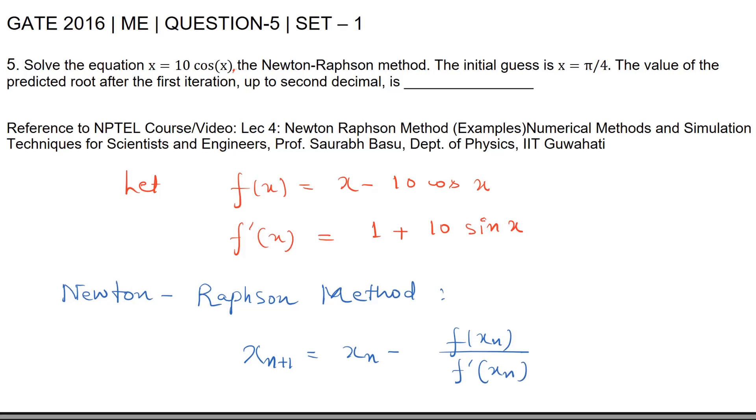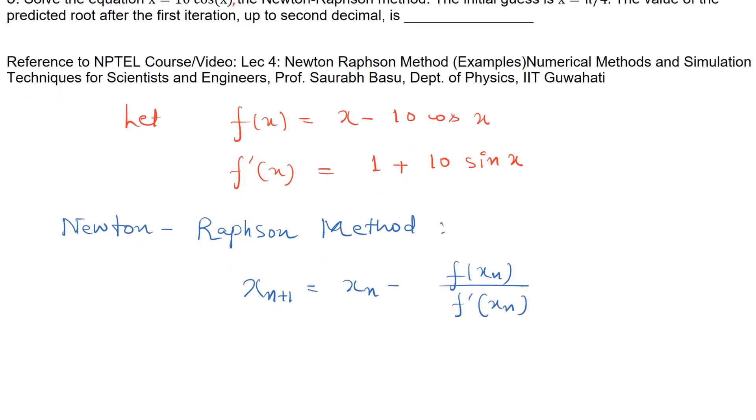Now here we need to find x₁, right? That means at n equals 0. So if we substitute n equals 0, this formula will become x₁ equals x₀ minus f(x₀) upon f′(x₀).